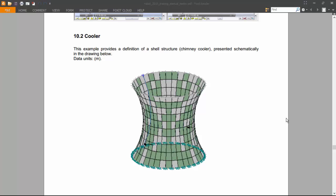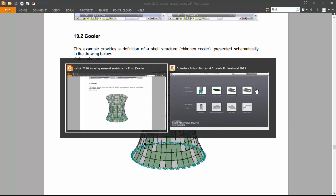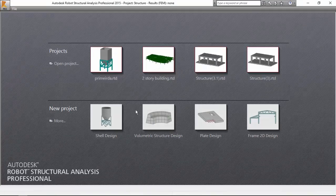Hello guys. In the last part we did the exercise on the silo, and now we are going to make the exercise on the cooler, which is the second exercise of exercise number 10. Exercise number 10 is on the geometry of shell structures, so let's go to shell design.